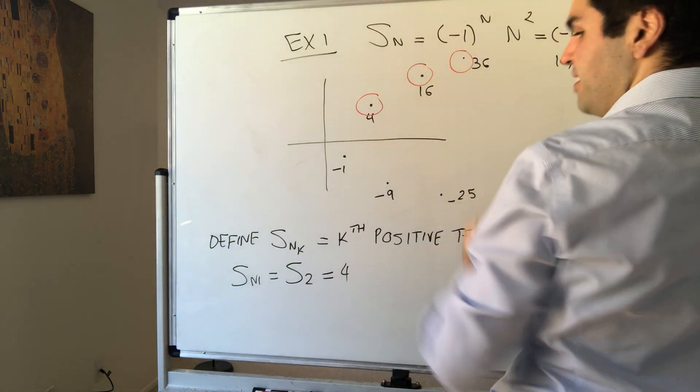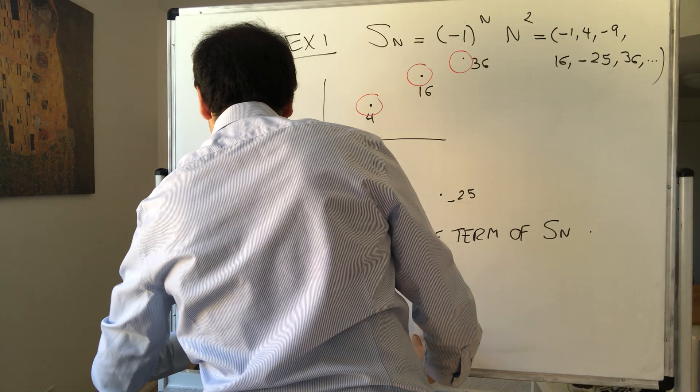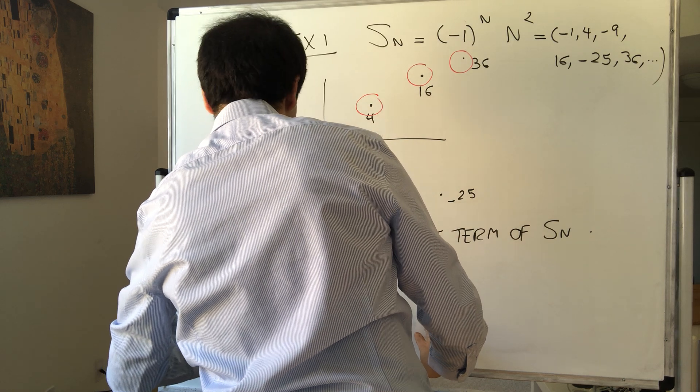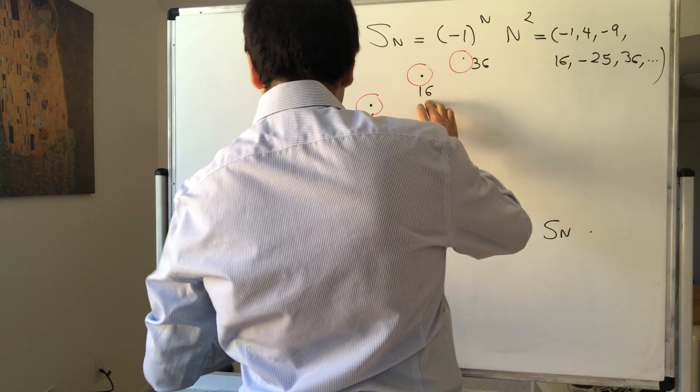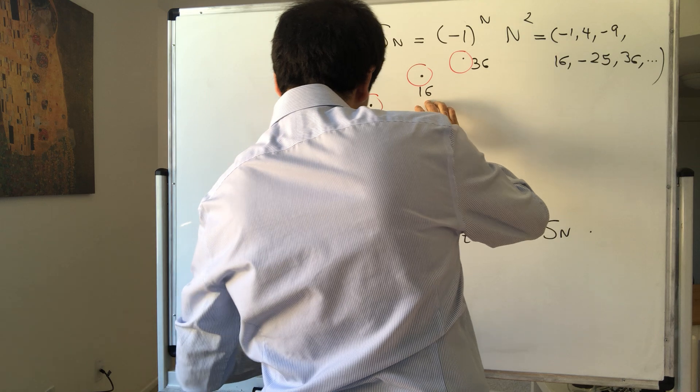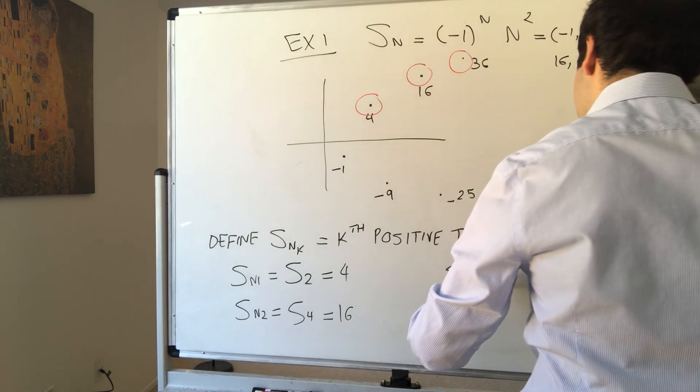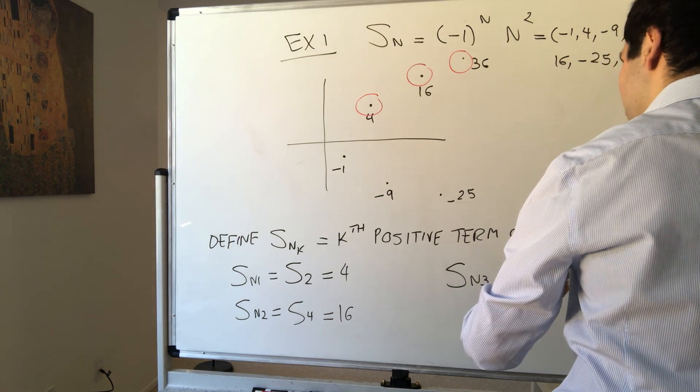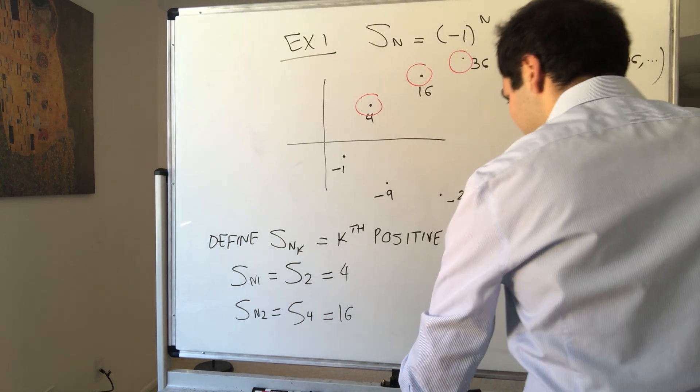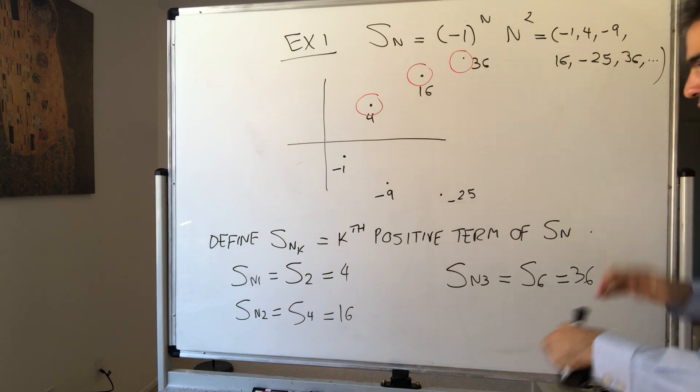The second express stop, Sn2, is the fourth term, S4, which is 16. The third stop, Sn3, is S6, which is 36.